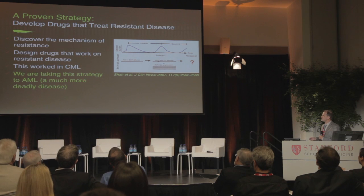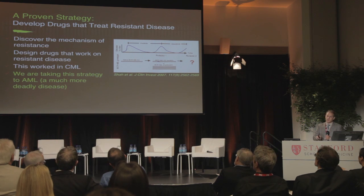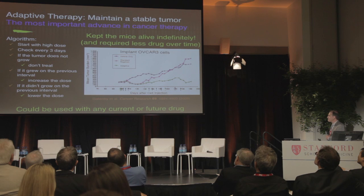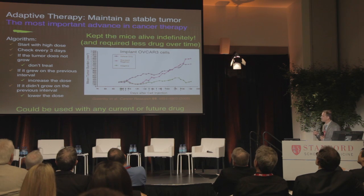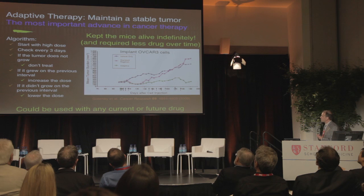We're taking this strategy into acute myeloid leukemia, which is a much more deadly disease. We're doing genomics of samples pre-therapy and when the patient has relapsed to understand what are the selective effects of therapy and how we can address them. I think this next paper is the most important advance in cancer therapy — a paper by Bob Gatenby at Moffitt Cancer Center, entitled Adaptive Therapy.